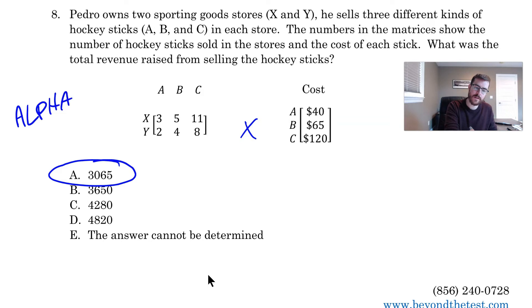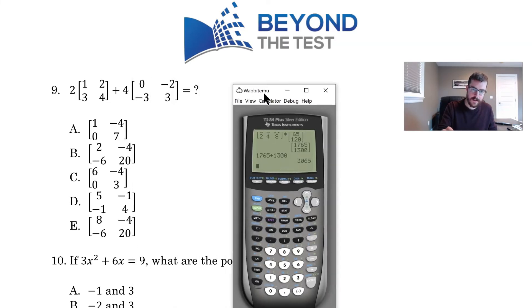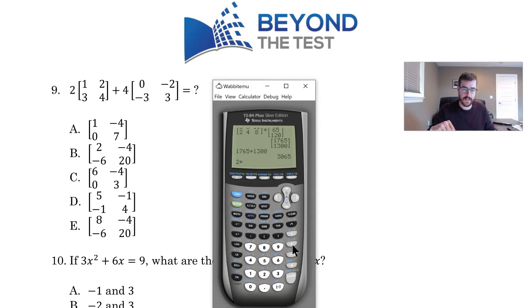So for matrices, you can use this alpha and then zoom to get to the matrix. Let's look at another one like this. For number nine, what it says is we want to do two times that matrix plus four times that matrix. So I can just type this in: two times alpha zoom. And now this matrix is a two by two. So it's two rows by two columns. We're just going to type this in: one, two, three, and four. And then plus four times alpha zoom. This is also a two by two. So I just click enter. And we get zero, negative two, negative three, and then three. If I just type that in, it gives me the answer two, negative four, negative six, 20. Oh, look at that. That's choice B there. So I have my answer.